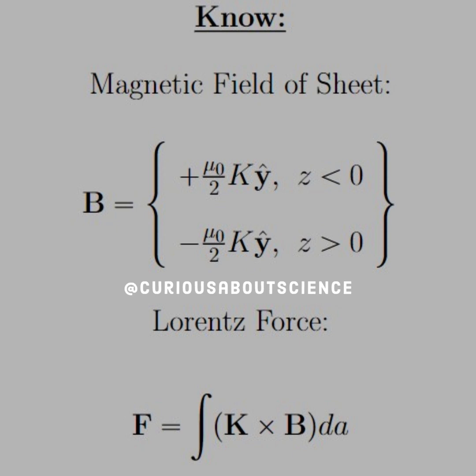What we should know for this is that the magnetic field of a sheet, which we found using Ampere's law, is plus mu naught over 2K, which is the surface current density, for z less than 0, and negative for z greater than 0. That right-hand rule will come into effect again.